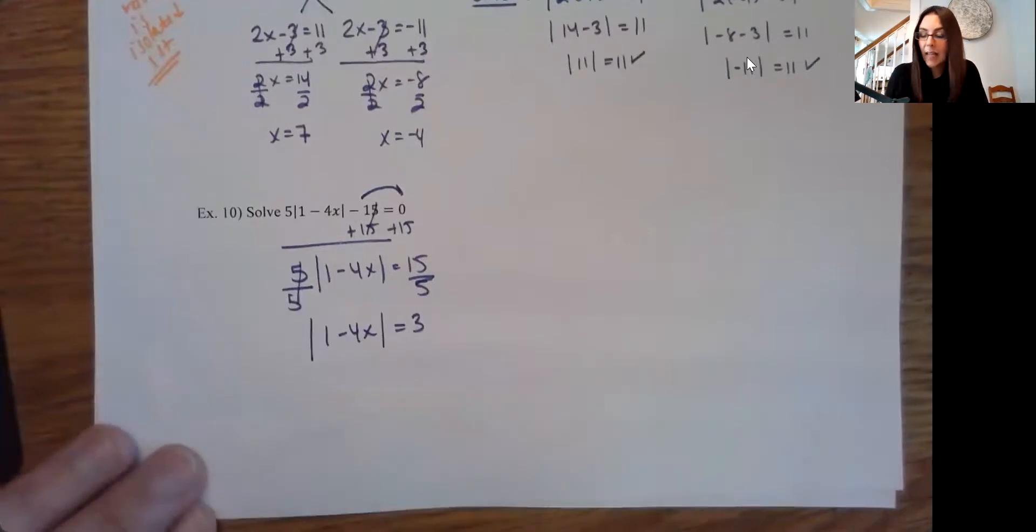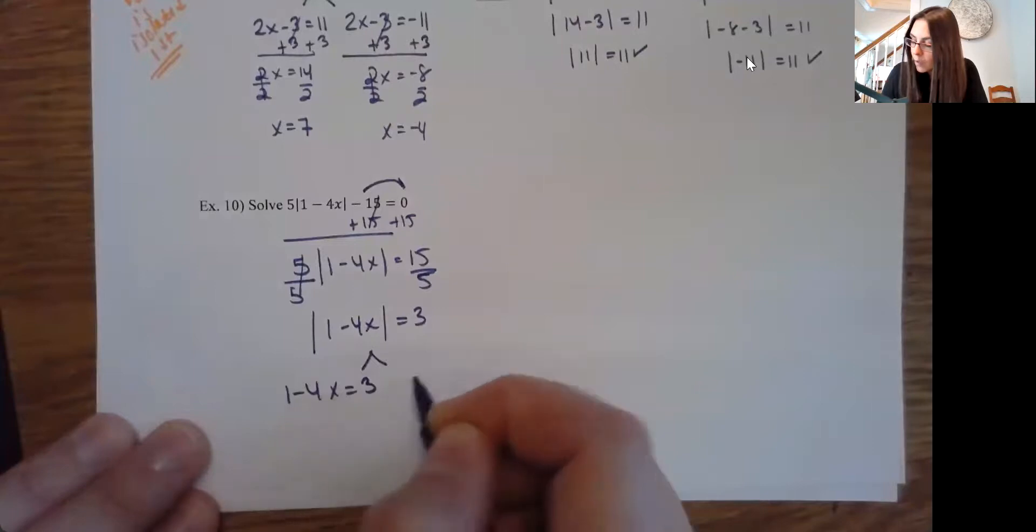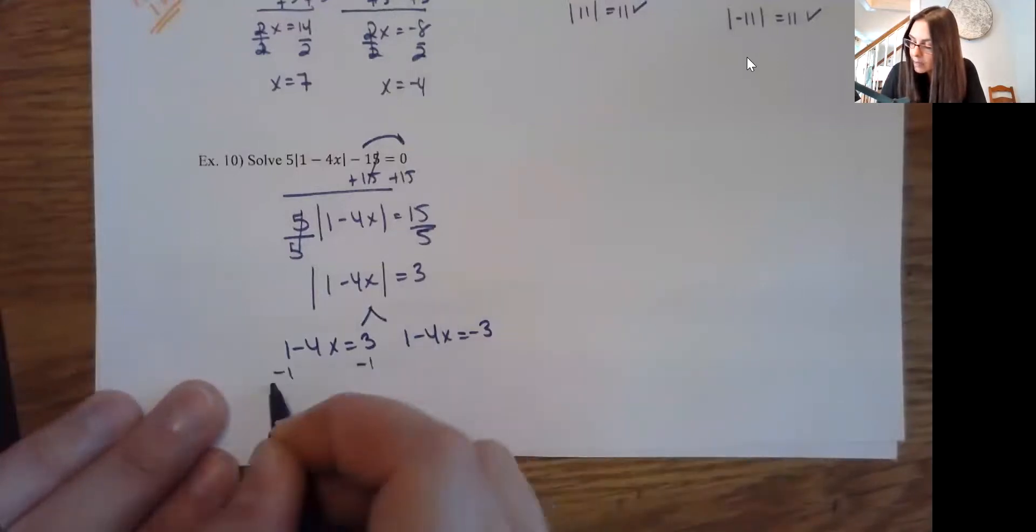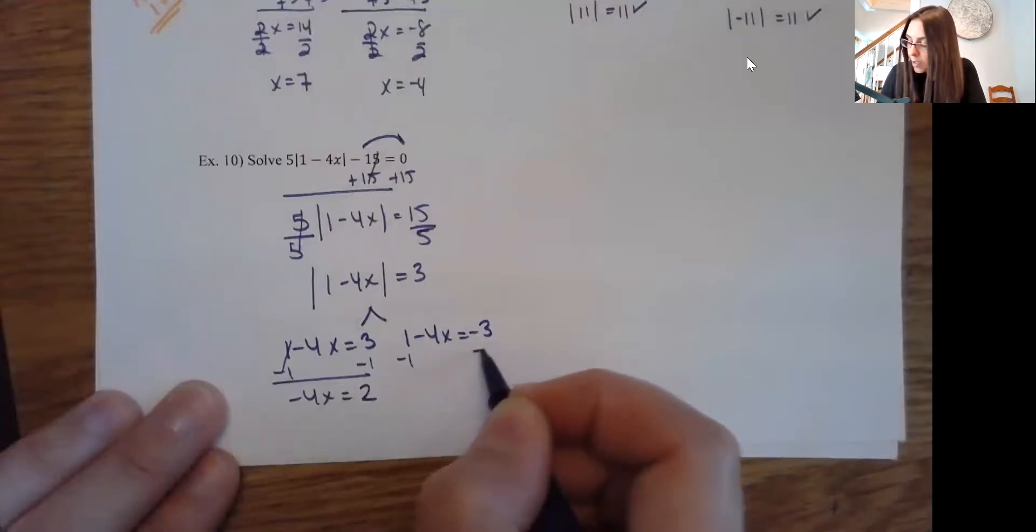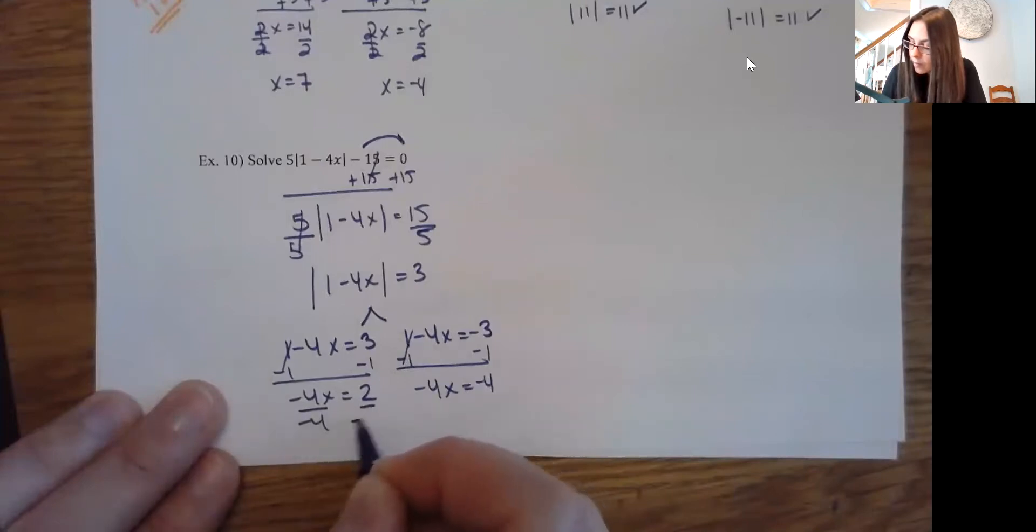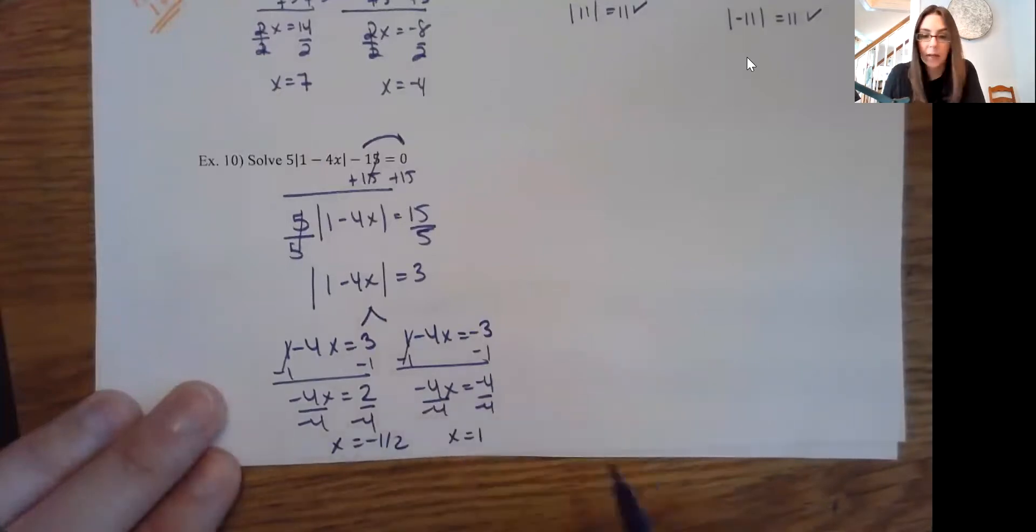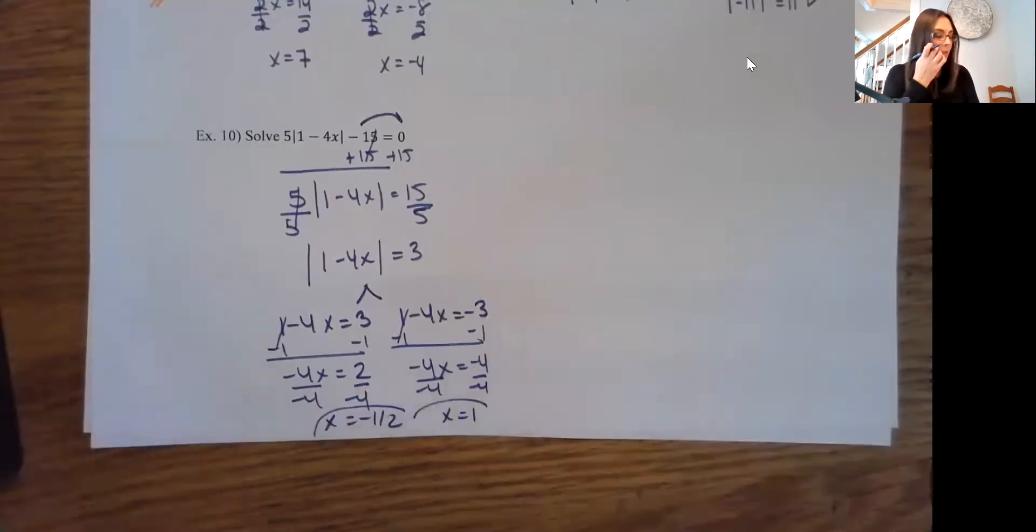Once it is, now I can split into my two parts. So 1 minus 4x equals 3, and 1 minus 4x equals negative 3. Subtract 1 from both sides. Here, you're doing the same steps, but you're going to get different answers. And then I divide by negative 4. And I have x equals negative 1 half here, and x equals positive 1 here. And I'll let you guys try the check at home.